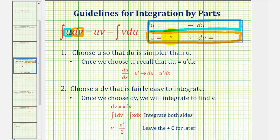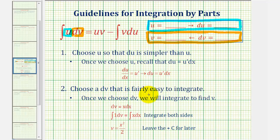Once we have all these pieces, we'll apply the integration by parts formula, and then hopefully this integral here will be easier to integrate. The guidelines for choosing u and dv are: choose u so that du is simpler than u, and choose a dv that is fairly easy to integrate.